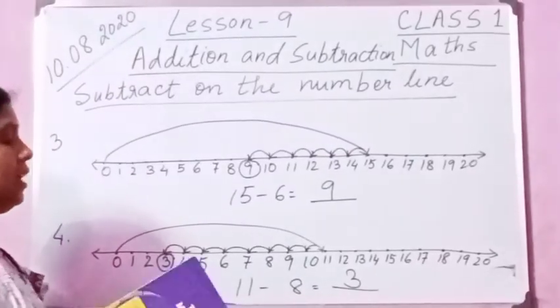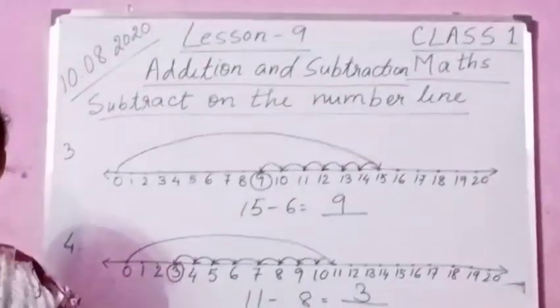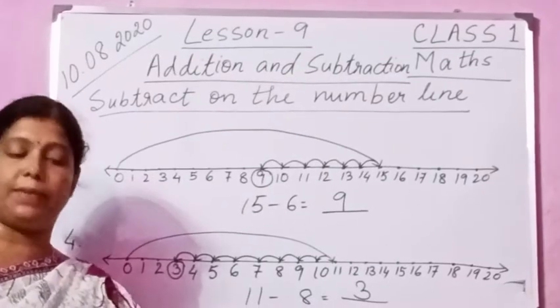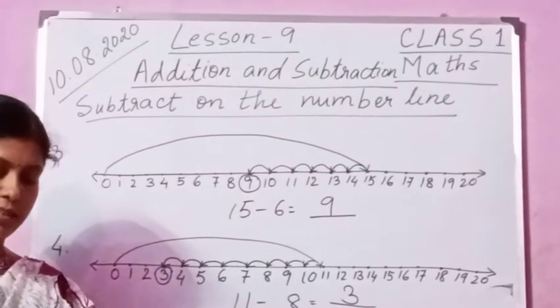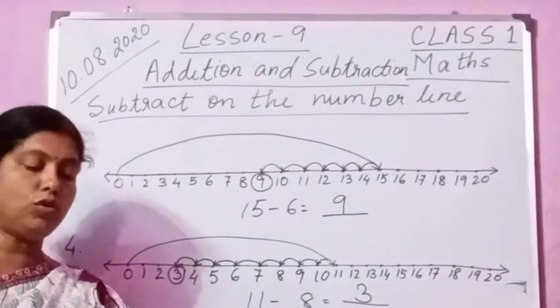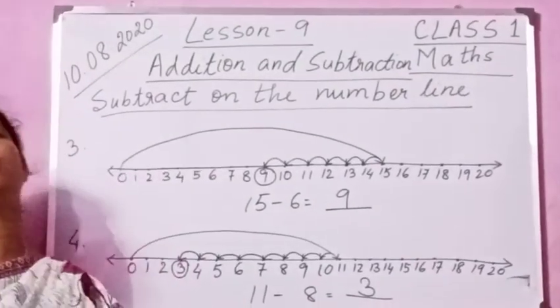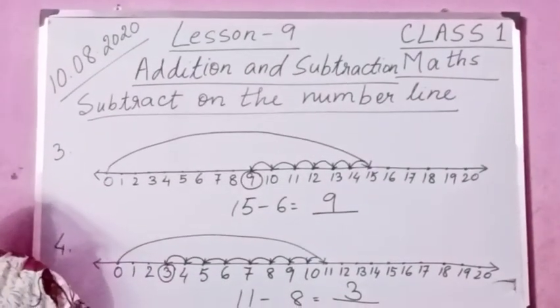So in today's class I have discussed examples 1, 2, 3 and 4. In the next class I shall discuss 5, 6 and 7 — subtraction on the number line. Please go through this lesson. Thank you.